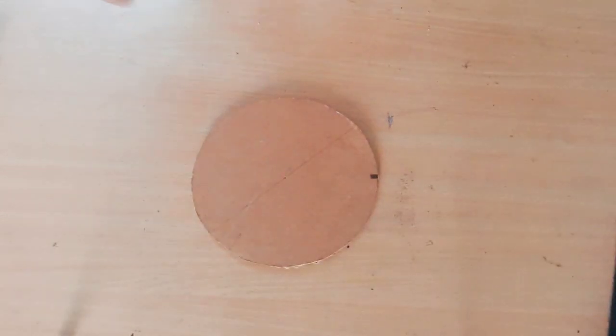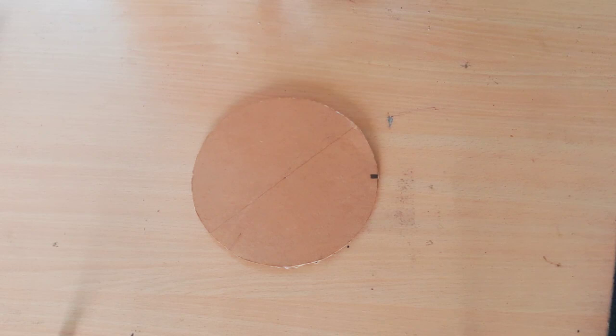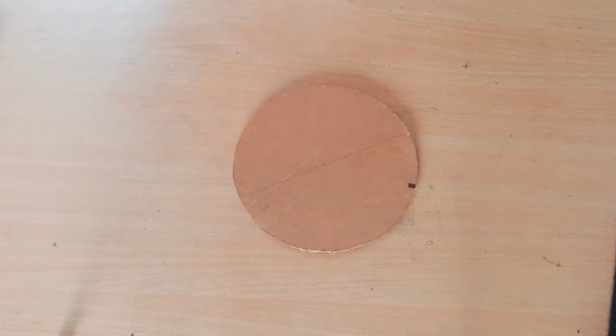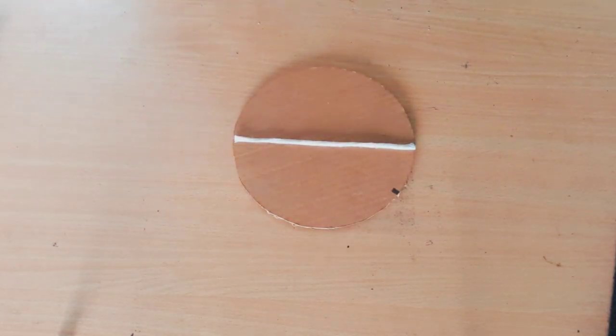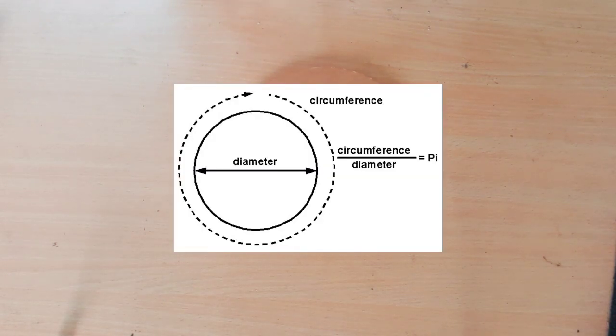Let's take a real circle. This circle has a diameter, and what you know, the Pi is the circumference of the circle by diameter.